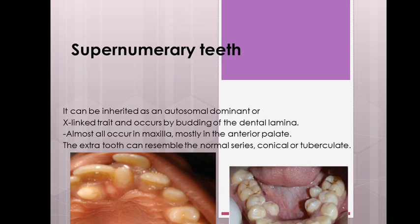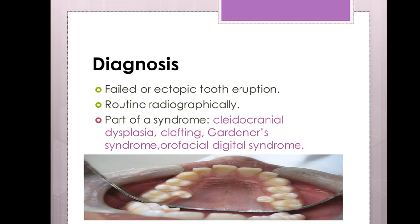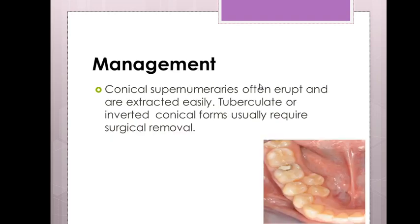For diagnosis, look for a failed or ectopic tooth eruption found routinely on radiographs. It could also be part of a syndrome, such as cranial dysplasia, clefting, Gardner syndrome, or orofaciodigital syndrome. Here you can see an additional premolar — this is what we call a supernumerary tooth.